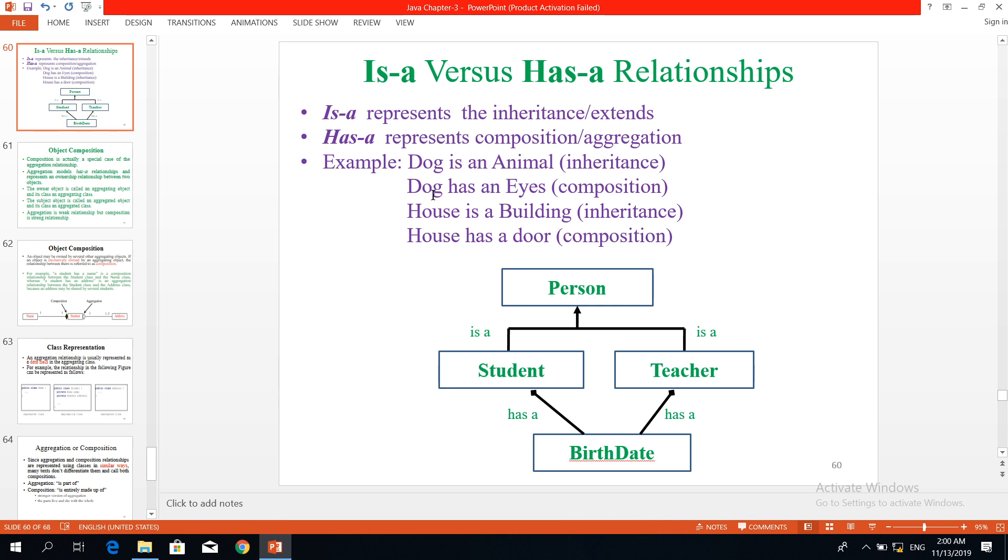Dog is an animal - this is inheritance. Has-a relationship - dog has an eye, dog has an eye, house has a door. This is composition. House is a building - this is inheritance. Has-a - composition or aggregation.